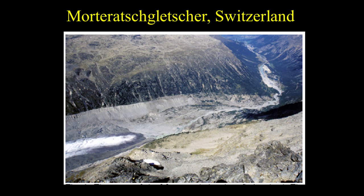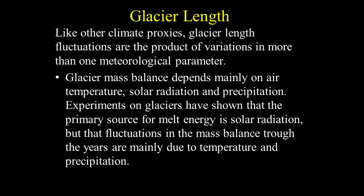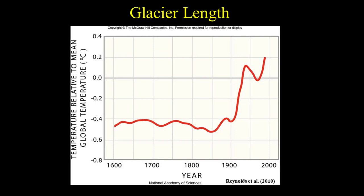Here is a picture of the snout of a glacier in Switzerland — the former position of the glacier front has left clear marks in the landscape. Glacier length fluctuations are the product of variations in more than one meteorological parameter. Glacier mass balance depends mainly on air temperature, solar radiation, and precipitation. Experiments show the primary melt energy source is solar radiation, but year-to-year fluctuations are mainly due to temperature and precipitation. Due to the delayed response of glaciers and the decreasing number of records, temperature cannot be reconstructed after 1990.